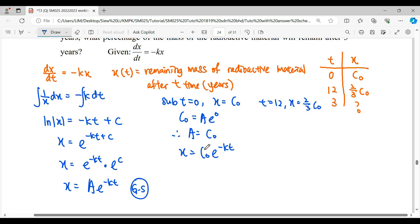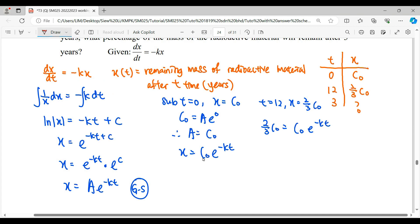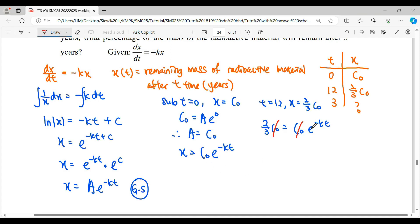So you can notice that C₀ and C₀ here, left hand side and right hand side can be simplified. Then we move the e to the left hand side. When we move the base e to the left hand side, it will be ln on negative 12k. So where t is 12, so finally we will divide by negative 12.